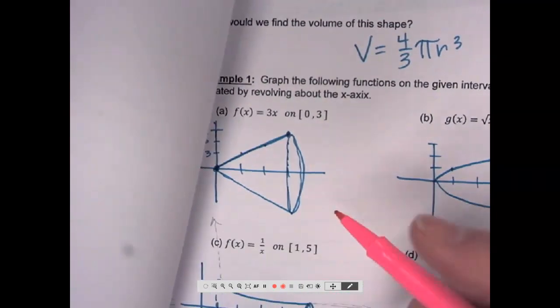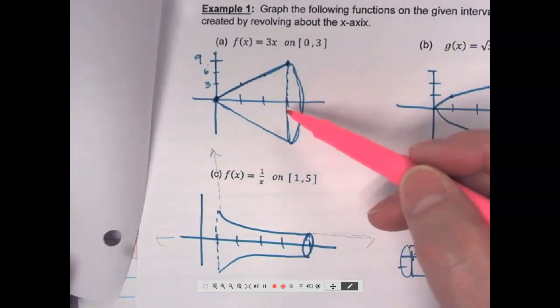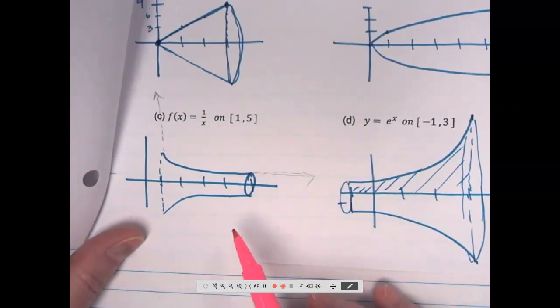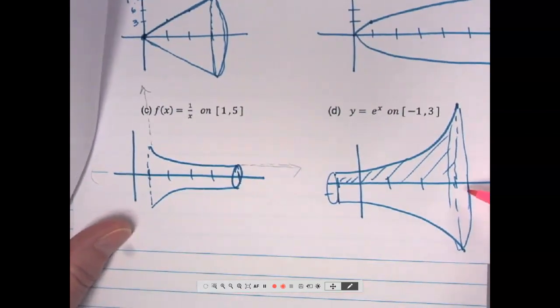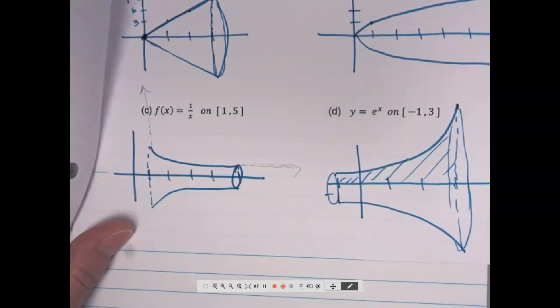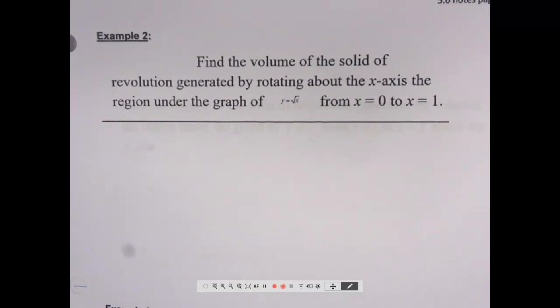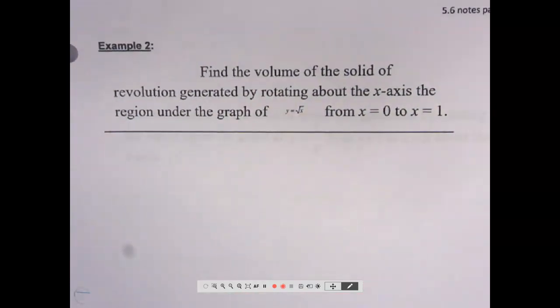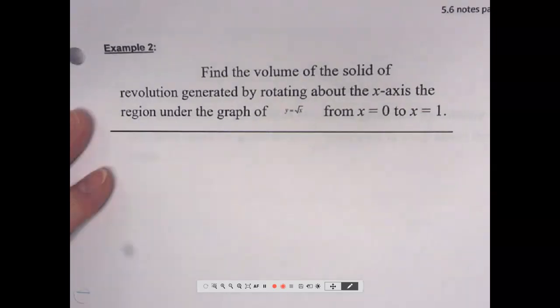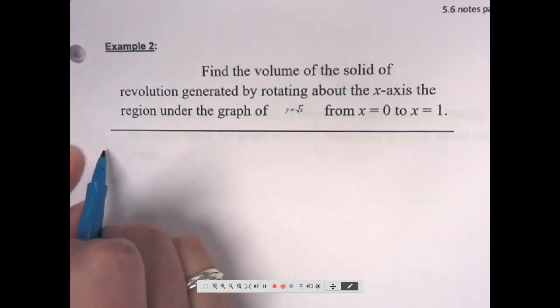So short good news is we can use calculus to find the exact volume of this that we could also do with geometry. Or something like this beaker thing. Or this funnel without an opening. Things that we don't have a formula for. We can use calculus to find the exact volume. So that's what we're going to do on the next page. Find the volume of the solid of revolution generated by rotating about the x axis. The region under the graph. I don't know why that was printed so tiny. Y equals square root of x from 0 to 1.